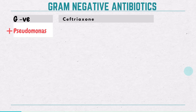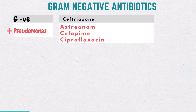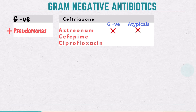What if we need to add pseudomonal coverage? Remember these three antibiotics: 1. Aztreonam — purely a gram-negative drug, no activity against gram-positives or atypicals. 2. Cefepime — covers gram-positive bacteria but no atypical coverage. 3. Ciprofloxacin — primarily targets gram-negative bacteria and atypicals, but has limited activity against gram-positive organisms compared to other fluoroquinolones like levofloxacin.